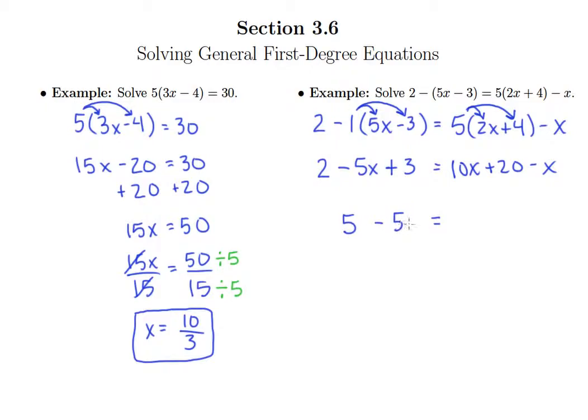10x minus x is 9x and then plus 20. I need to get all variable terms on one side, all constant terms on the other.